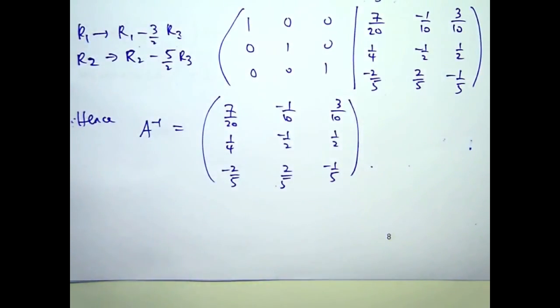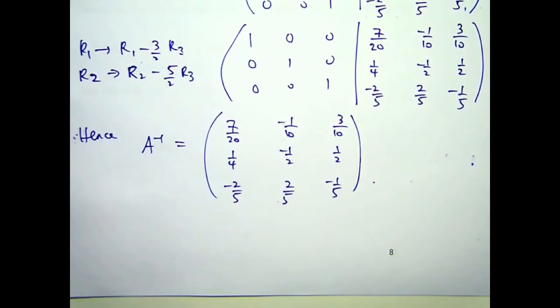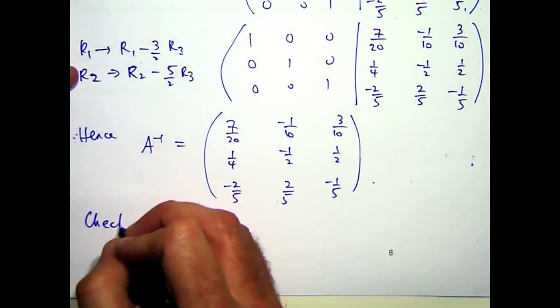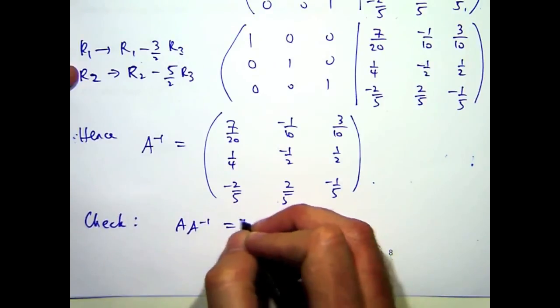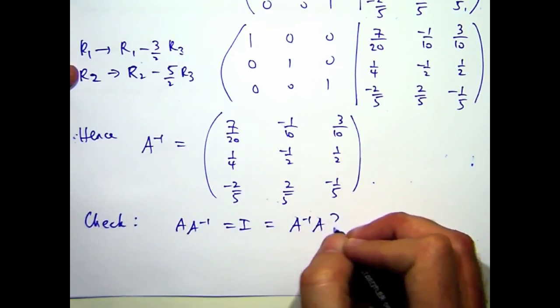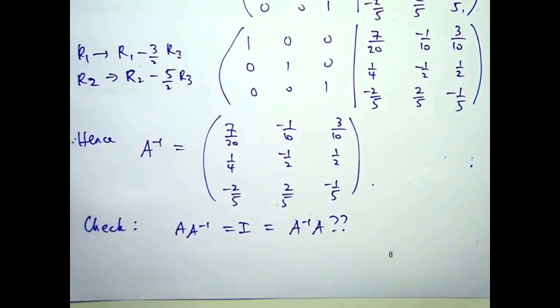So how do you know if you're right or not? Well, you can check. I'm not going to do it, but you can check just by working out the two products. Now, the inverse matrix is unique. There's one and only one inverse of a matrix. If it has an inverse, there's only one of them. So if you calculate an inverse matrix and your mate calculates the inverse matrix and you get different answers, there's something wrong. They could be equivalent to each other, but if they're wildly different, then there's something wrong.